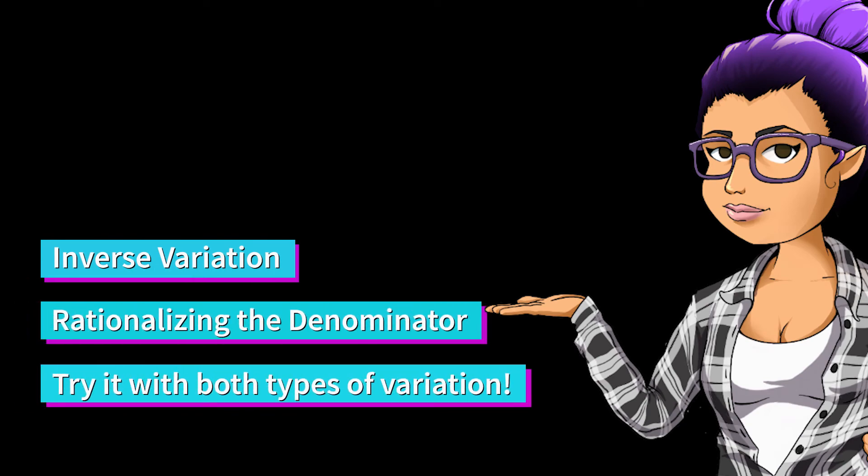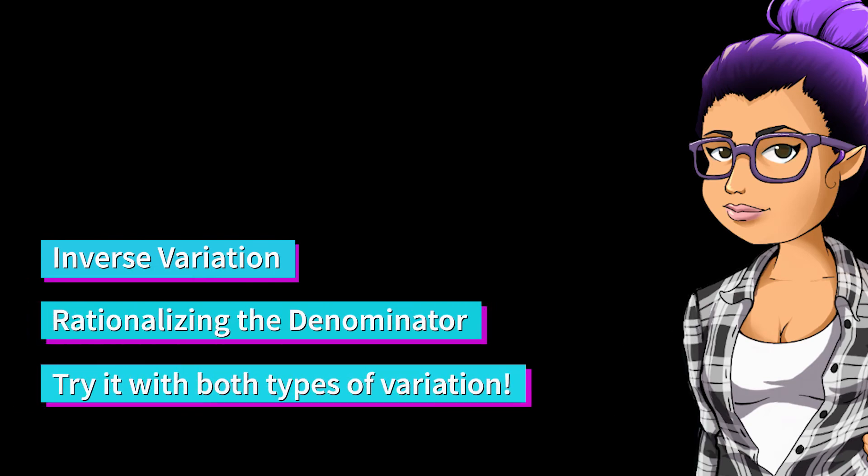This was an example of inverse variation. You also learned about rationalizing the denominator should you choose to do this on these types of problems. You can also now use any combination of direct and inverse variation relationships for something called joint variation.